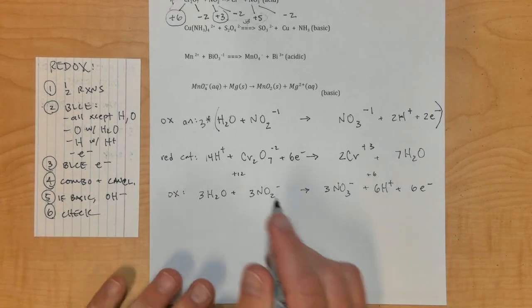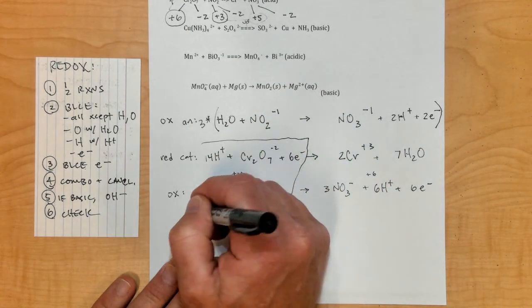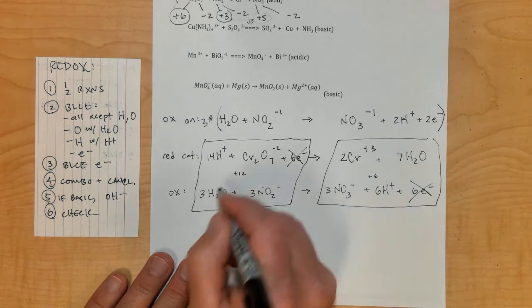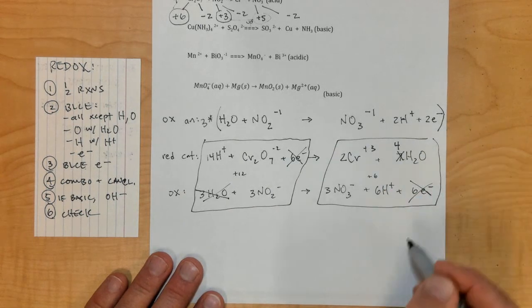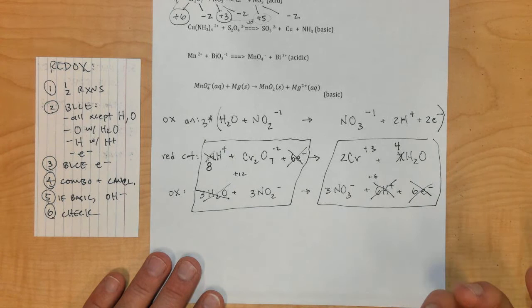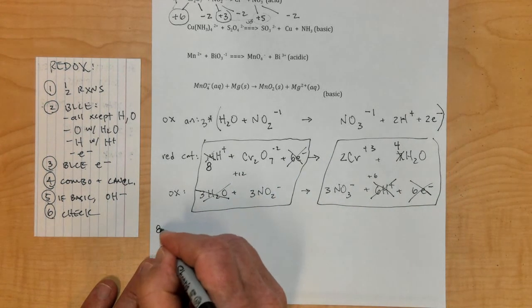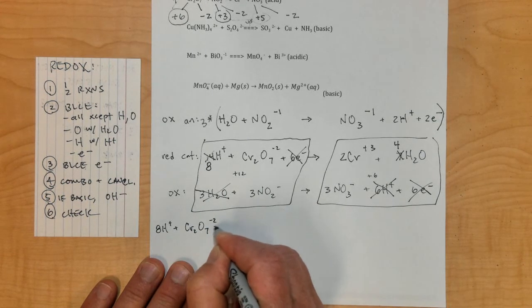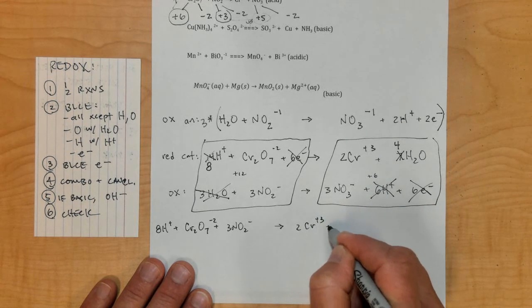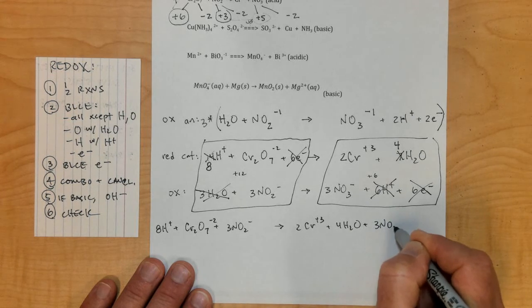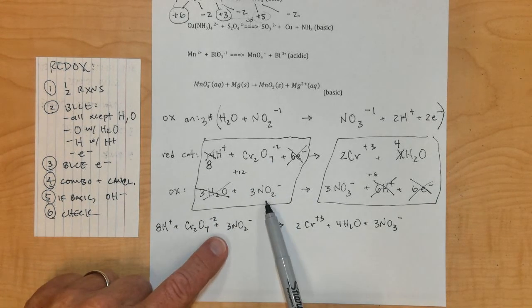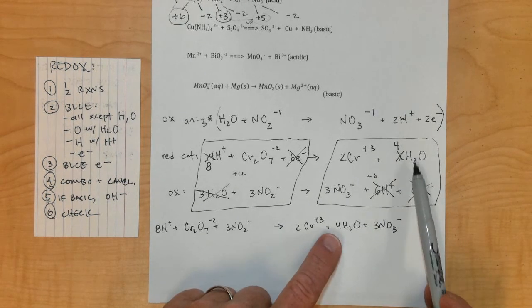Now, combine and cancel. The 6 electrons will cancel with the 6 electrons. I'm going to cancel 3 waters, which gives me 4 waters on this side. My 6 hydrogens will cancel with 14, getting me down to 8 hydrogens. Let's rewrite this side: 8 H pluses, plus Cr2O7 2 minuses, plus 3 NO2 minuses, arrow. Then 2 Cr positive 3, plus 4 H2Os, plus 3 NO3 minuses. I think those are all cancelled out.